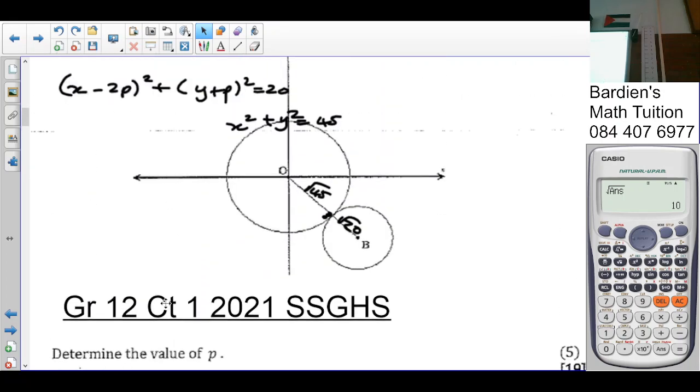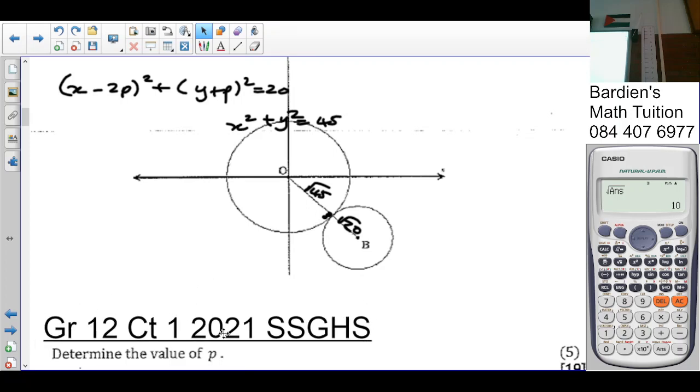The question says determine the value of p. So B's coordinate is simply going to be 2p and negative p. So again, we can work with the distance formula here.